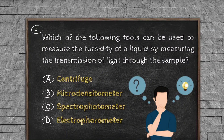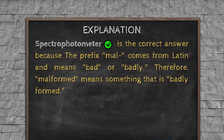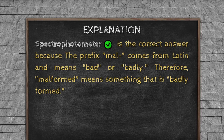Question number four. Which of the following tools can be used to measure the turbidity of a liquid by measuring the transmission of light through the sample? Option A, Centrifuge. Option B, Microdensitometer. Option C, Spectrophotometer. Option D, Electrophotometer. Explanation: Spectrophotometer is the correct answer because the prefix mal comes from Latin and means bad or badly. Therefore, malformed means something that is badly formed.